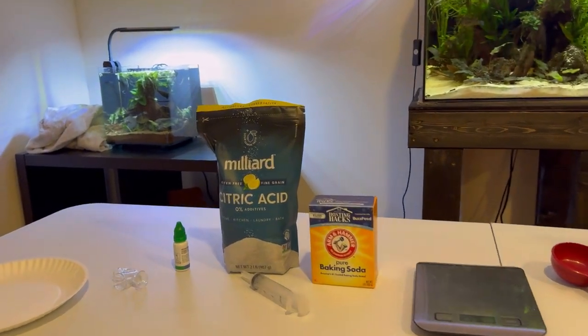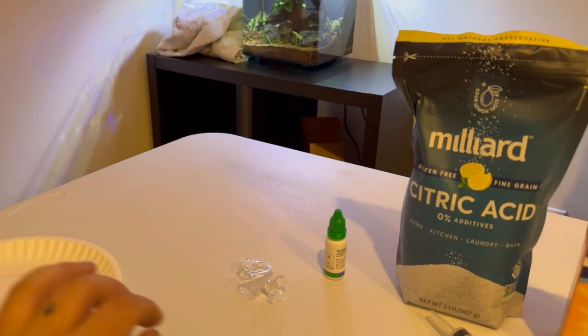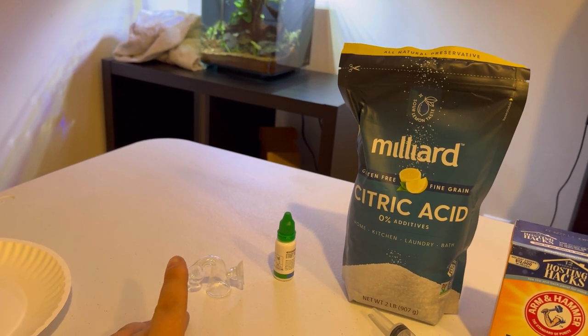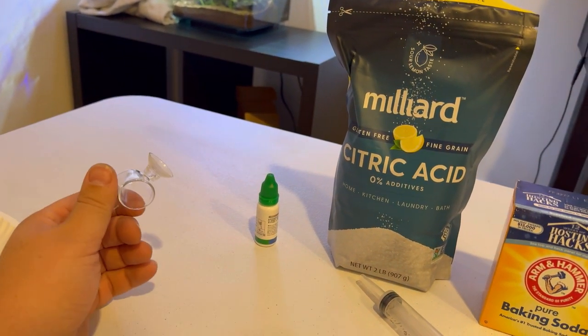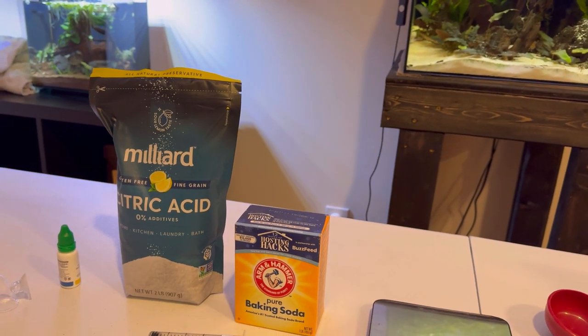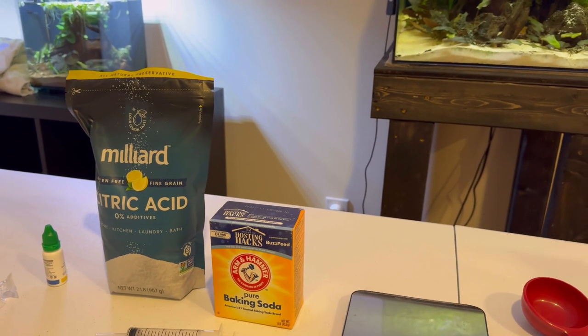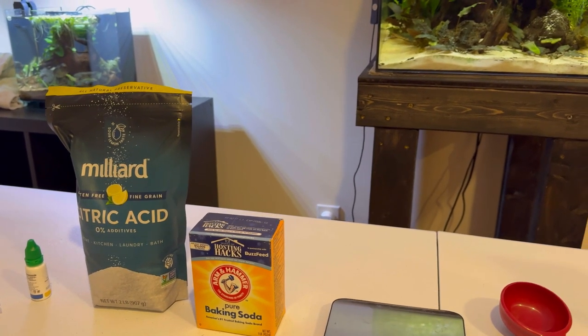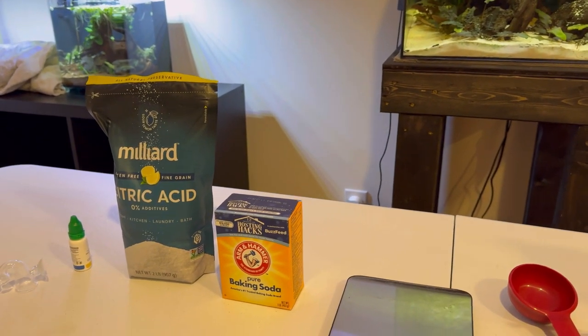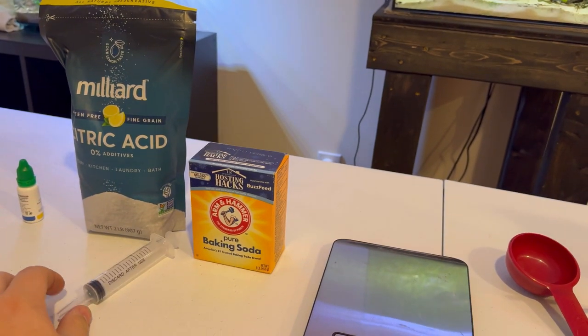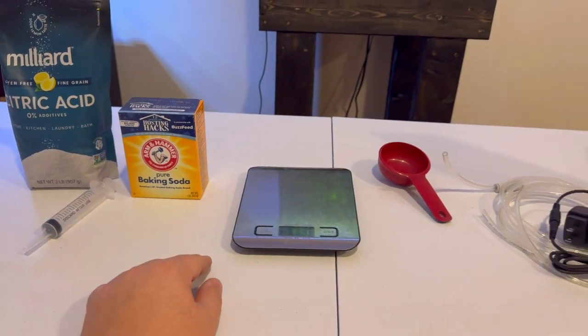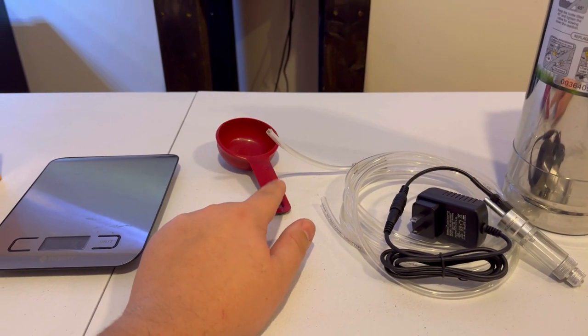But anyways, your basic things you're going to need are something to use as a funnel, which obviously is that plate. We've got a drop checker here, which real quick, that basically turns from blue to green to yellow, depending on how much dissolved CO2 you have in the water column. And you put this fluid in there and that's what does that. Citric acid and baking soda are going to be two dry ingredients and then some water is going to be your third ingredient that's going to create your CO2 mixture as they react with each other. There's an endothermic reaction, which is a cold reaction. I have a syringe here just to help fill up the bubble counter. Obviously, you're going to have a scale to weigh out your two ingredients there, citric acid and baking soda.